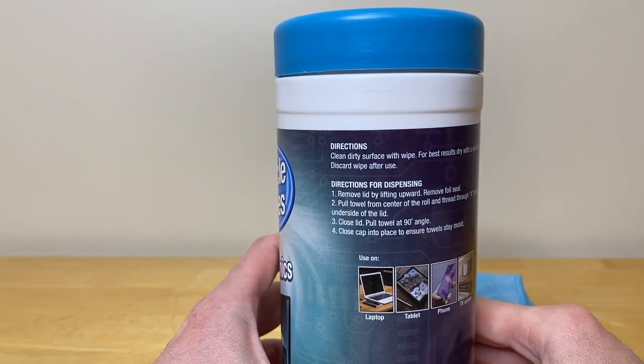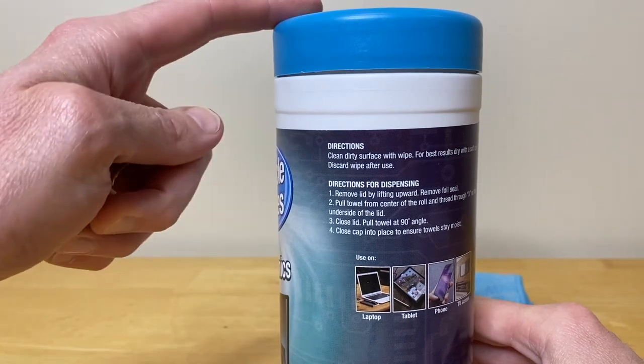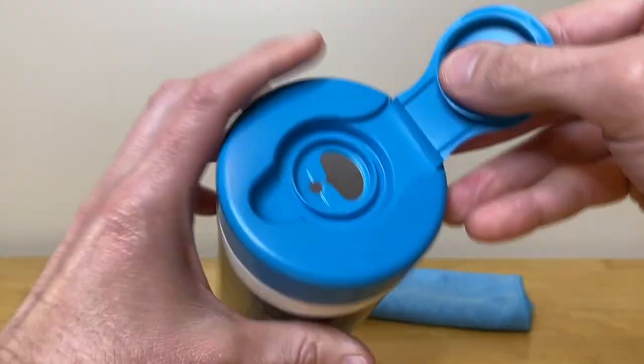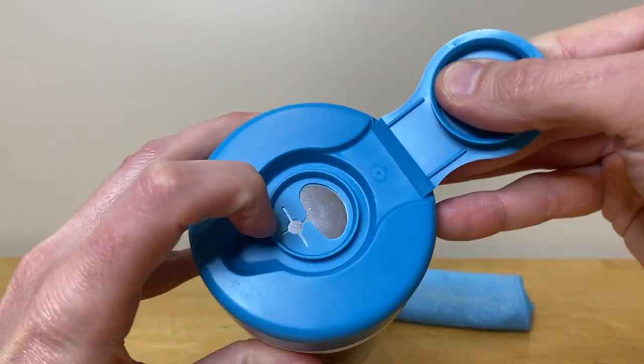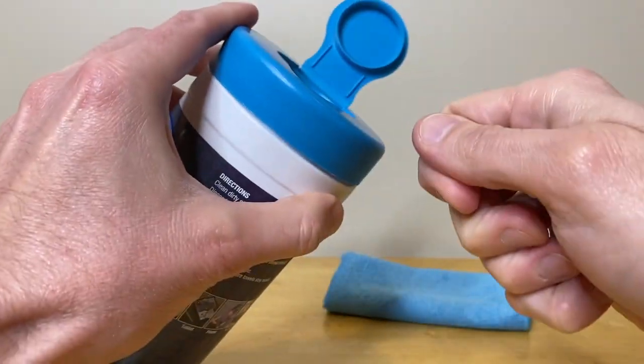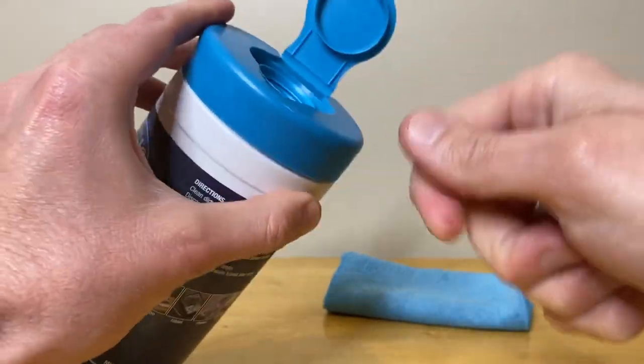In addition, it has the directions for dispensing, which is basically removing the top cap and removing the foil, which is the seal, and then positioning the wipes in the extraction hole here, and then pulling them out and separating the wipe from the inner wipe at a 90 degree angle.